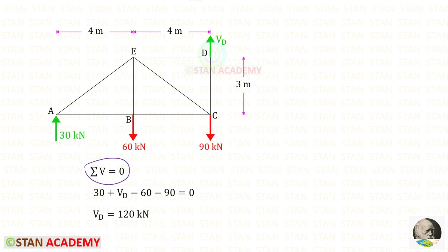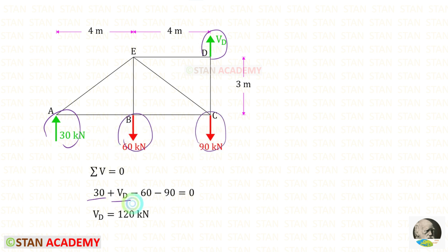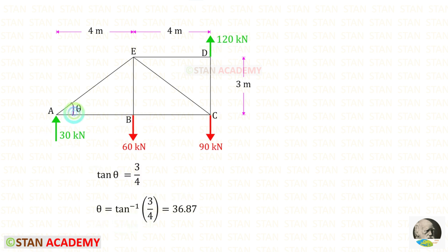Applying sigma V = 0 to find VD: VA and VD are acting upwards so both positive; the two loads are acting downwards so both negative. For VD we will get 120 kN. We need to find the angle theta. Taking the triangle and applying the tan theta formula: opposite side 3 upon adjacent side 4. For theta we will get 36.87°, and the alternate angle is also 36.87°.